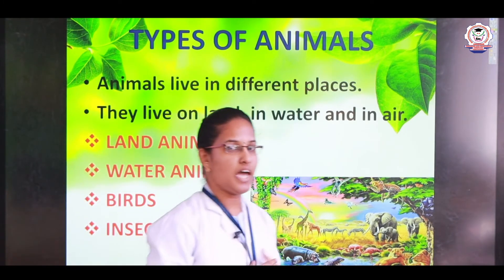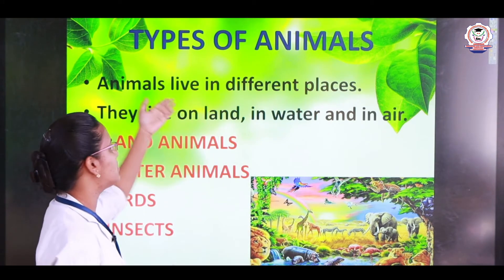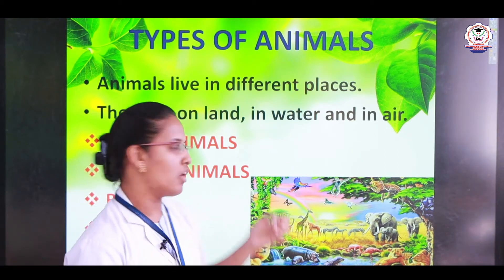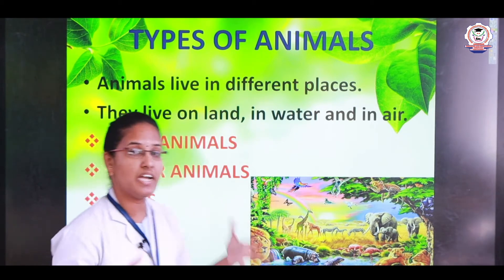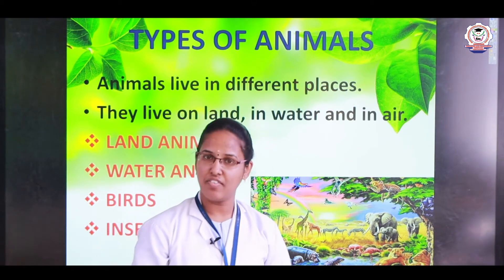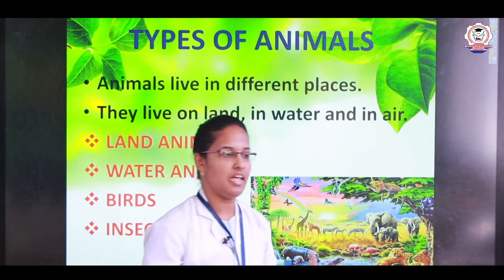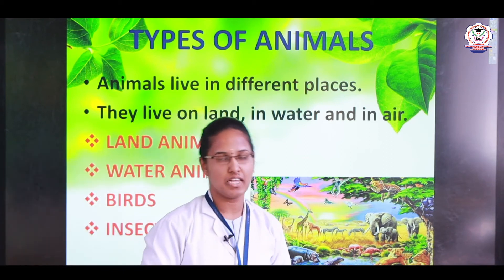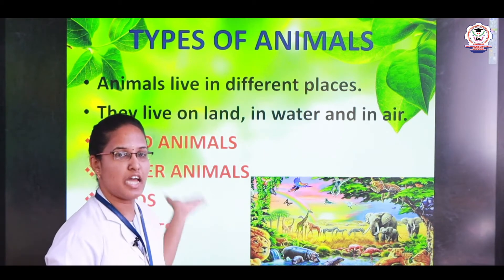As I mentioned, we have different types of animals. Animals live in different places — we classify animals into many types according to the places where they live. They live on land, in water, and in air. Some animals live on land, some live in water. Based on that, we classify the types of animals.